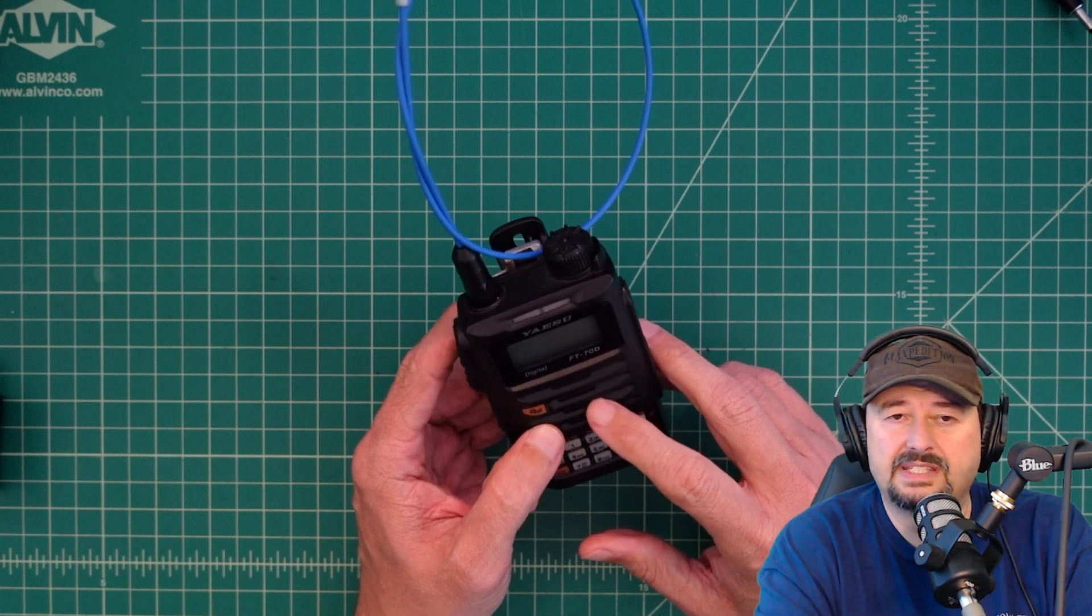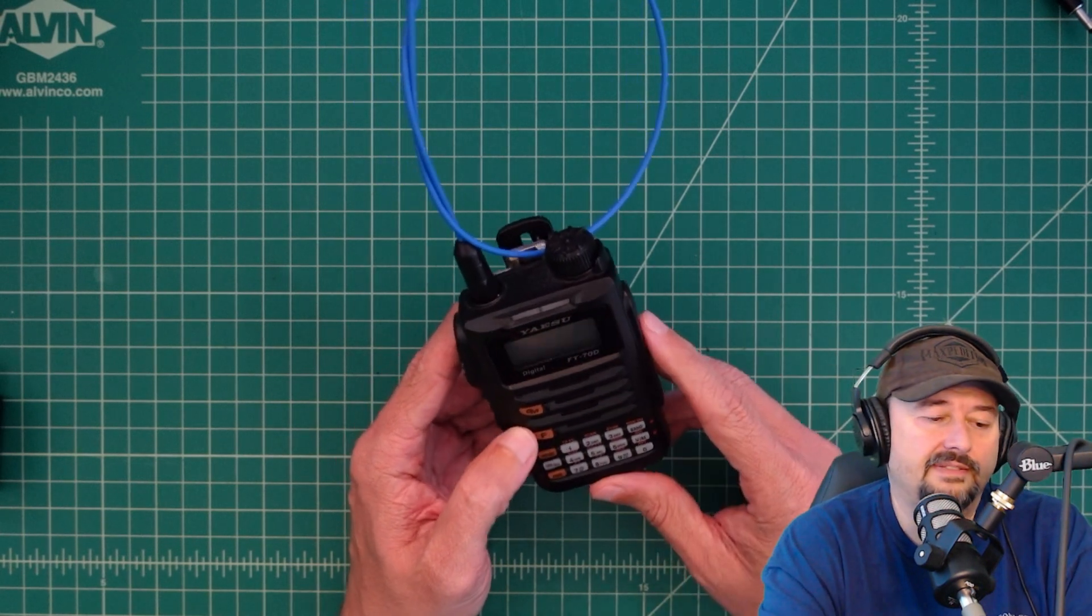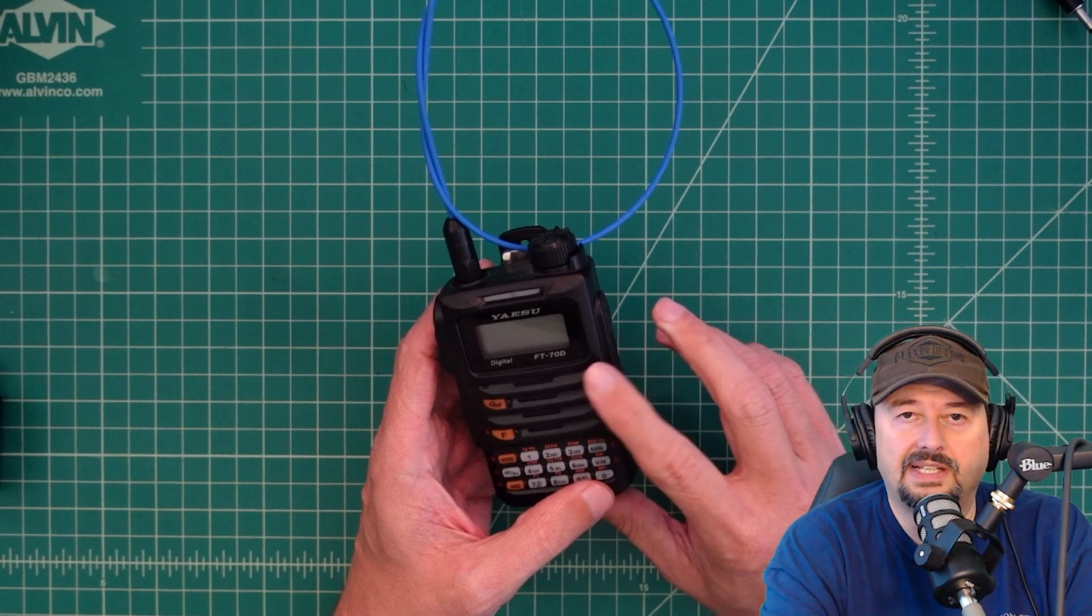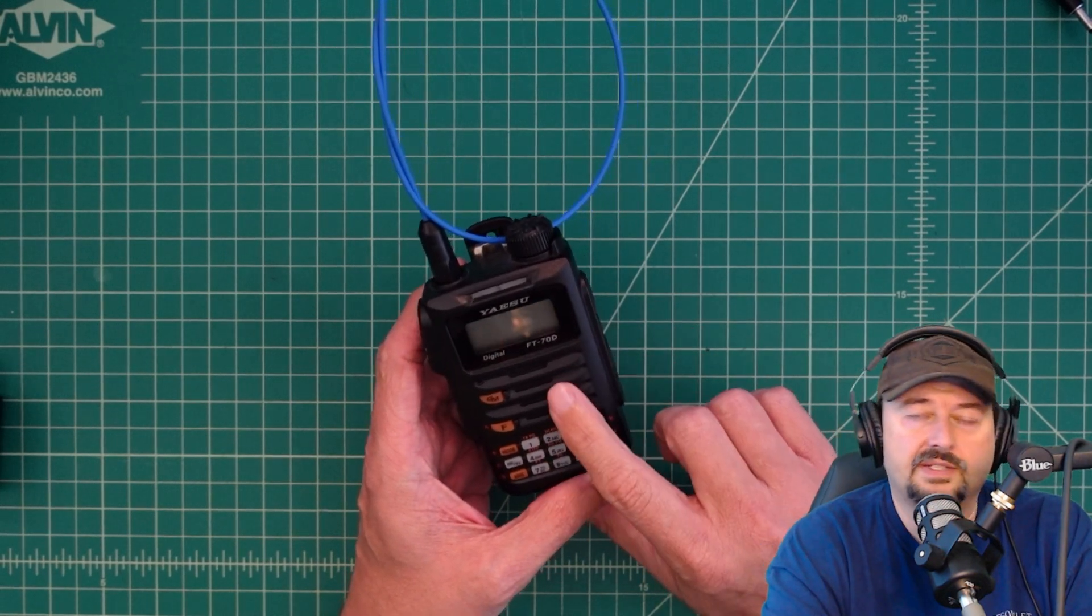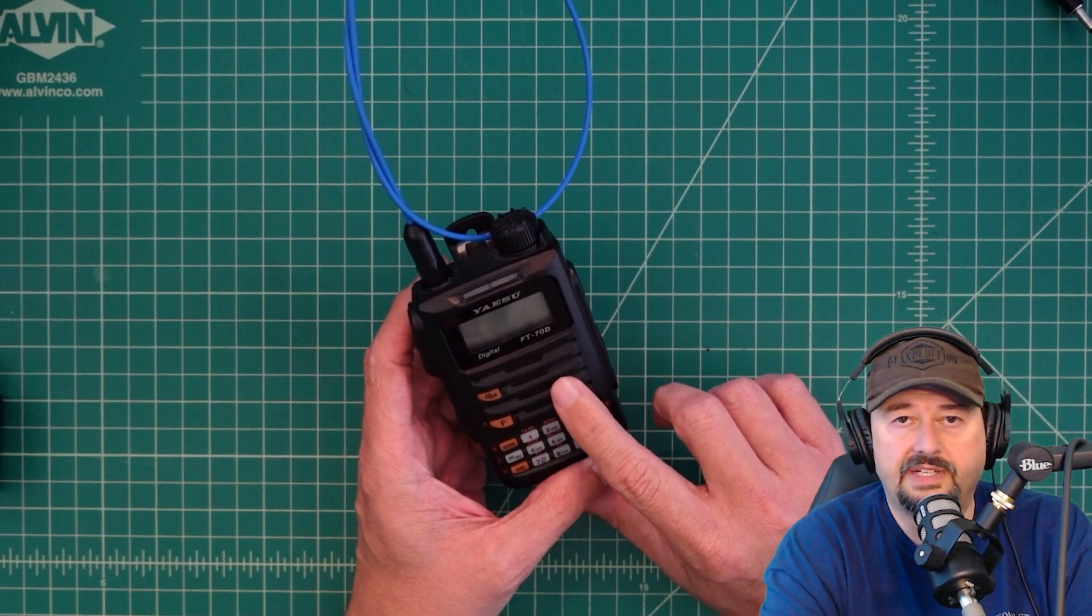You can get these for about $175 which is a little expensive on the HT side but you get a lot of capability with this. It's a dual band 2 meter 70 centimeter radio.